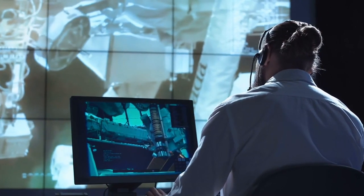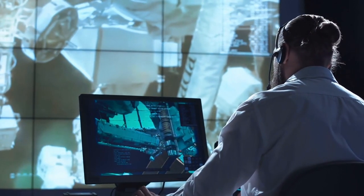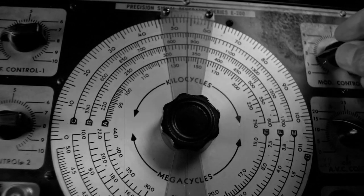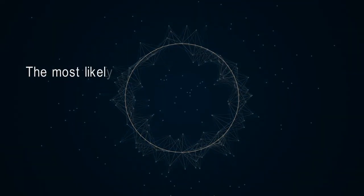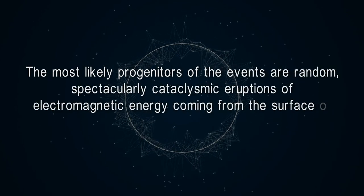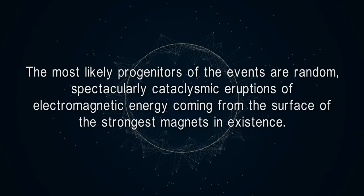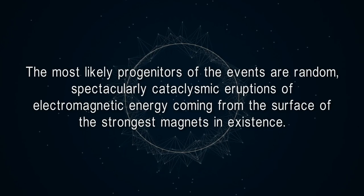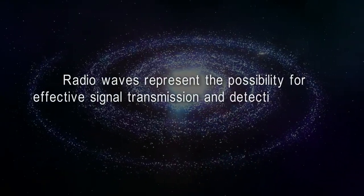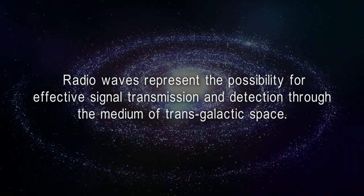Easily the most mysterious category of radio bursts observed by NASA is that of the repeating variety. Let's take a second to review what we think we know about radio bursts. Number one: the most likely progenitors of the events are random, spectacularly cataclysmic eruptions of electromagnetic energy coming from the surface of the strongest magnets in existence. And number two: radio waves represent the possibility for effective signal transmission and detection through the medium of transgalactic space.